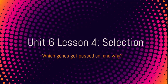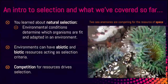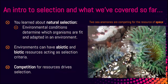Unit six, lesson four: Selection. We've been talking about the intro to evolution, then the evidence to support evolution, and then natural selection. We've learned that natural selection involves environmental conditions that determine which organisms are fit and adapted to an environment, and that abiotic and biotic resources act as selection criteria. Competition and predation also drive these types of selections.